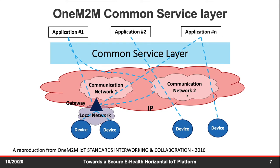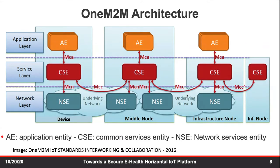Looking at the oneM2M architecture more closely, oneM2M can run on a device, on a gateway (router), or on a server (infrastructure node). In each device, it defines an application entity, and provides common service entities running on each device. For connectivity, it only requires the underlying network IPs and ports. Communication reference points like Mca (between common service entity and application entity) and Mcn (between common service entity and network service entity) all happen seamlessly between devices.